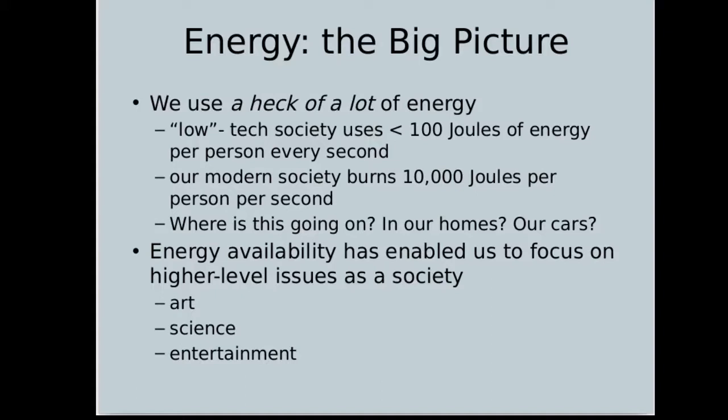That energy would be in the form of food, fire, draft animals, and tool usage. Our society, on the other hand, averages a much higher usage rate: 10,000 joules per second per person — 10,000 dropped books per second per person. Think about where that energy usage is happening. Is it in our homes, our food, our cars? It's so much larger than pre-tech peoples, but it allows us to focus on a lot more things than just acquiring food. The wealth of modern society compared to pre-tech societies is not really about money — it's about energy.